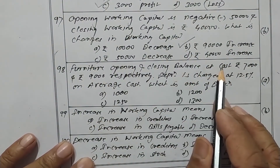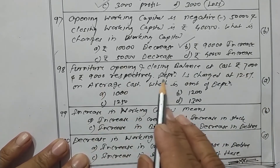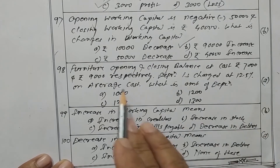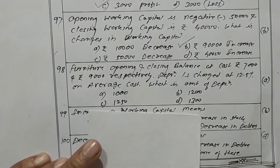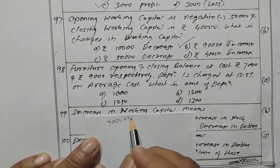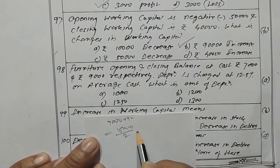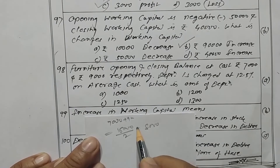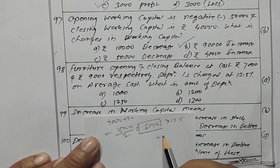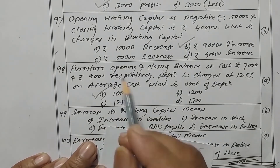Furniture opening and closing balance at cost is rupees 7,000 and rupees 9,000 respectively. Depreciation is charged at 12.5 percent on average cost. Average cost is 7,000 plus 9,000 equals 16,000 divided by 2 equals 8,000. Depreciation at 12.5 percent on 8,000 gives rupees 1,000. Option A is the correct one.